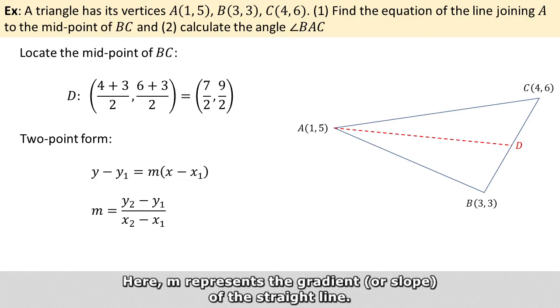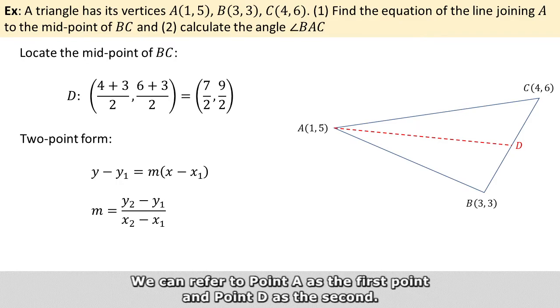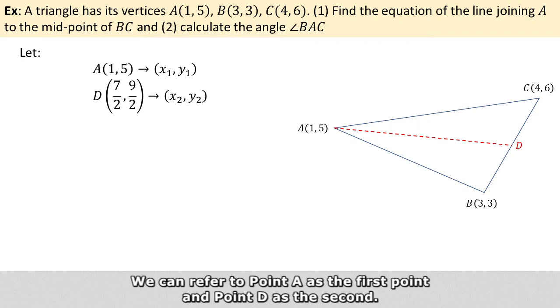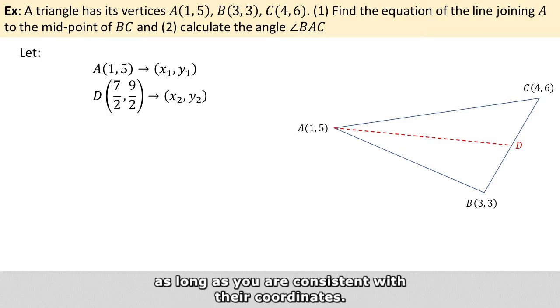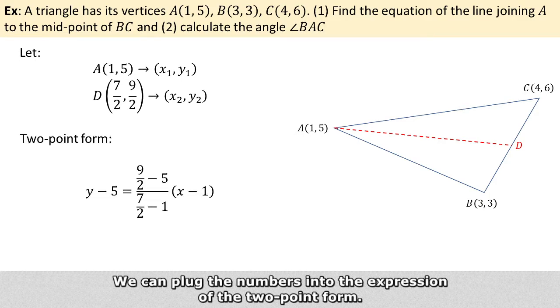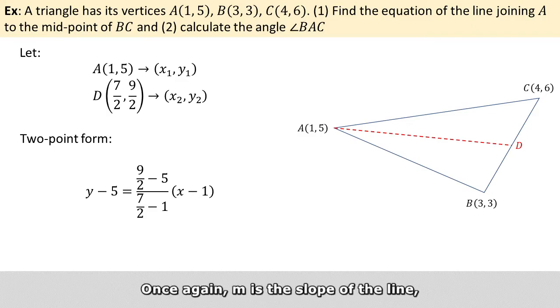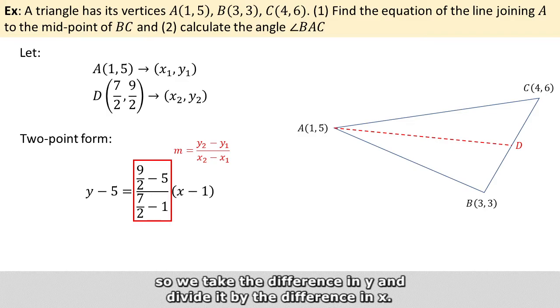Here M represents the gradient of the straight line. We can just refer to point A as the first point and point D as the second. It does not matter which one is which, as long as you are consistent with their coordinates. So we can plug numbers into the expression of the two-point form. And once again, M is the slope of the line. So we take the difference in Y and divide it by the difference in X.